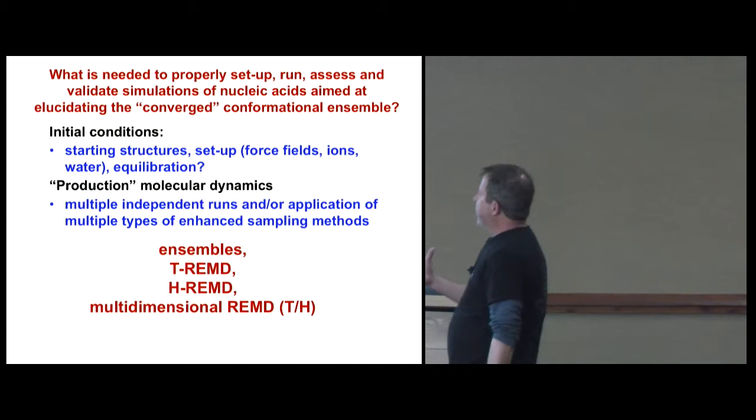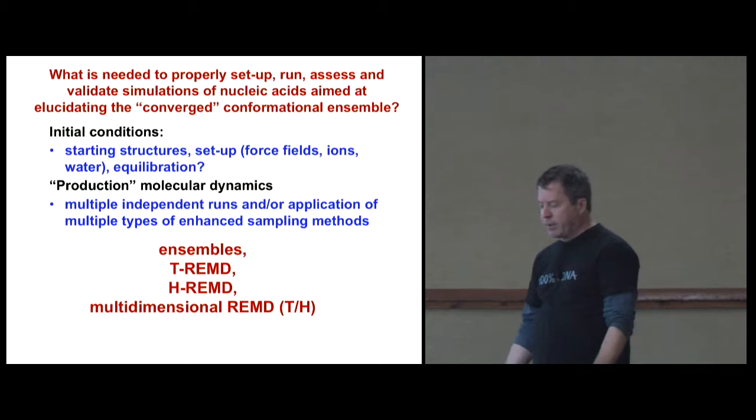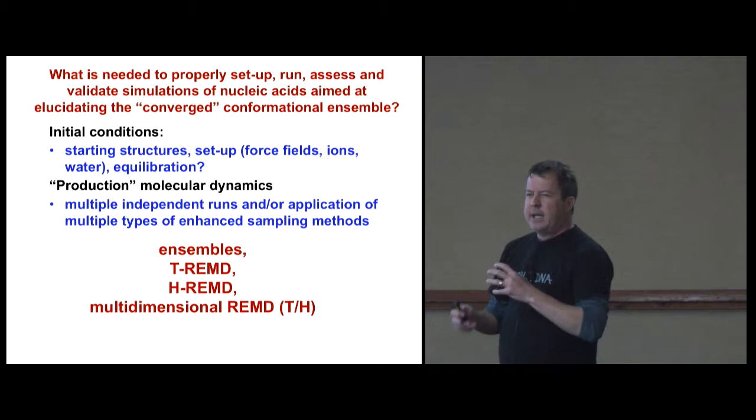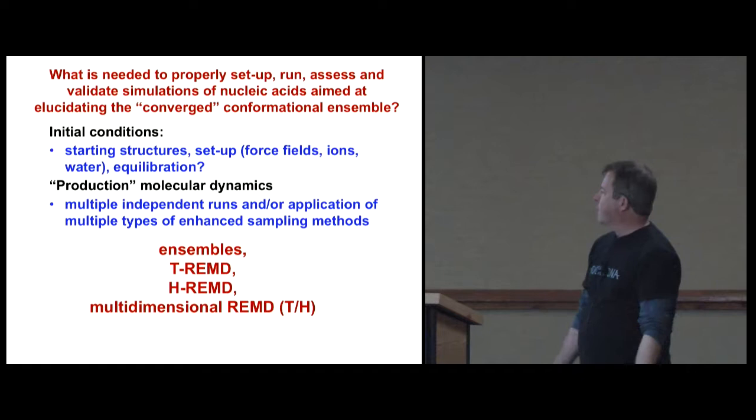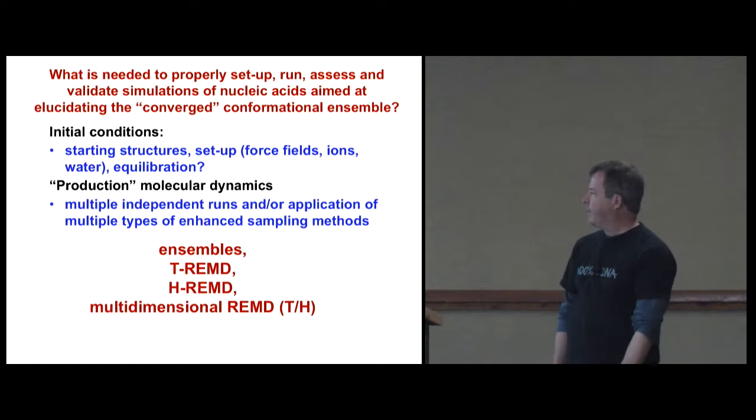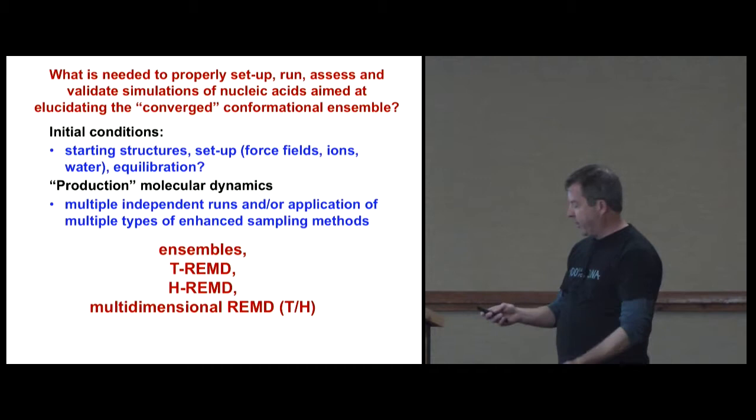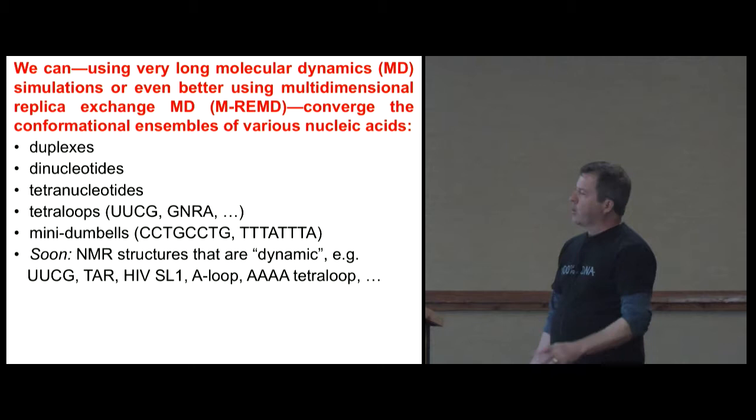Now, once we've got it set up, we want to run production MD. And the way we used to do it in the 90s was we'd run a single simulation for as long as we can. And that doesn't really tell you that much because you can't compare it to anything else. So we've now moved, we have to run multiple independent sets of simulations and try to even apply enhanced sampling methods that speed up the convergence and ideally multiple types of those methods so you can compare them and show that the results are equivalent among them. So we do lots of ensembles of calculations on Blue Waters, replica exchange MD, multi-dimensional replica exchange where we're changing force field and changing temperature. And this has allowed us to converge the conformational distributions of a variety of different systems.